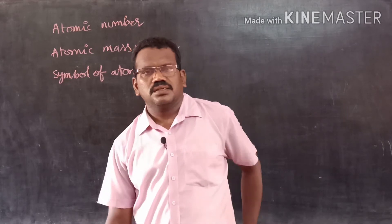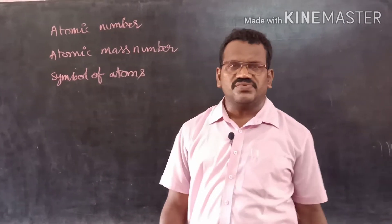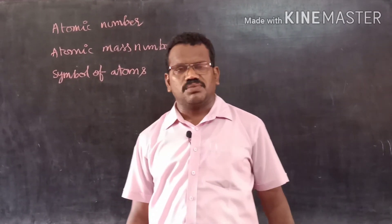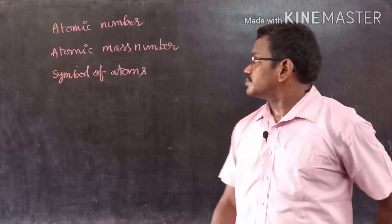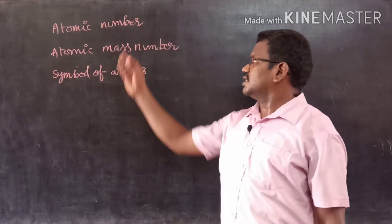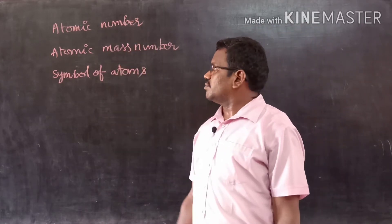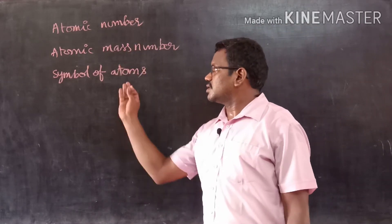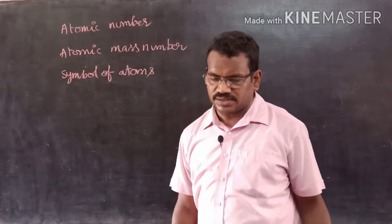Generally, we are going to use different kinds of terminologies in chemistry, that is atomic number, atomic mass number, and symbol of the elements.